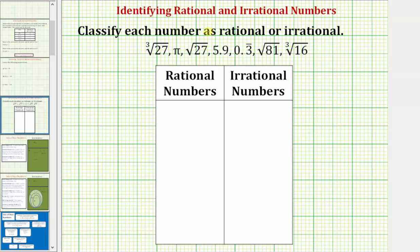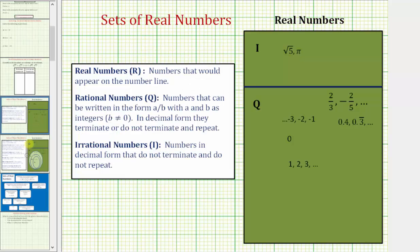We're asked to classify each number as rational or irrational. Rational and irrational numbers make up the set of real numbers, where real numbers are numbers that would appear on the number line. Rational numbers, often represented by the capital letter Q, are numbers that can be written in fraction form, with a form A divided by B, with A and B as integers, though B can't be zero, otherwise we'd have division by zero.